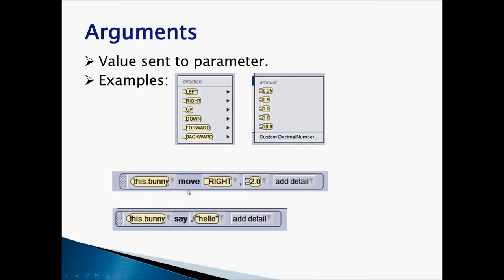Let's take a look at our move statement in here. I said this bunny move right too. So that means our right is an argument. 2 is an argument. Let's take a look at another example when we drag and drop bunny say hello. So looking at the statement, hello is our argument. So right, 2, hello are the arguments.